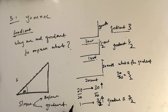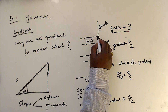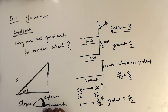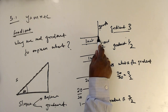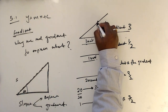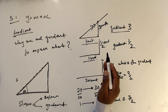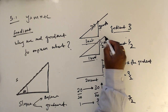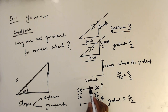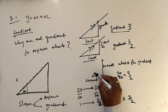So slope can be expressed as an angle or as a gradient. If gradient is 3, you go 3 units up for every 1 unit across — that gives you a specific direction. Similarly, if gradient is one half, for every unit across you go half a unit up. If you go 20 units across and 30 units up, that determines the direction of the line.